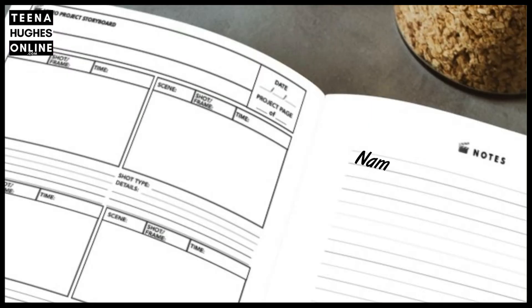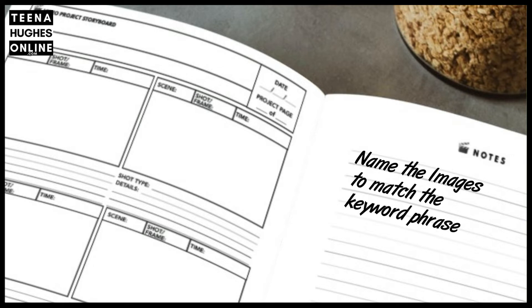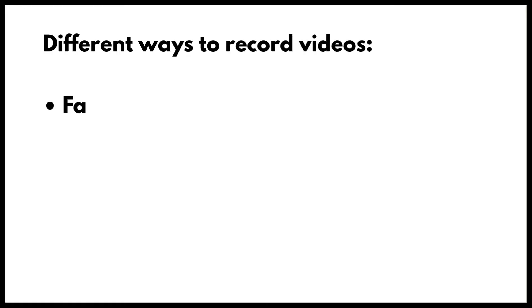I always name my images to match the keyword phrase, so I can clearly see which image I am looking for when I start using my video editor. Step number five: I can record my video with face on camera, known as a talking head video, or by recording my screen as I walk through the steps I'm sharing.